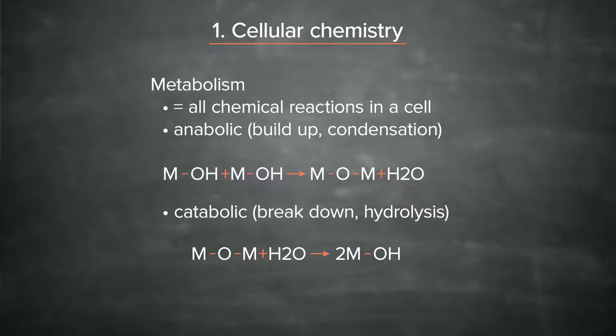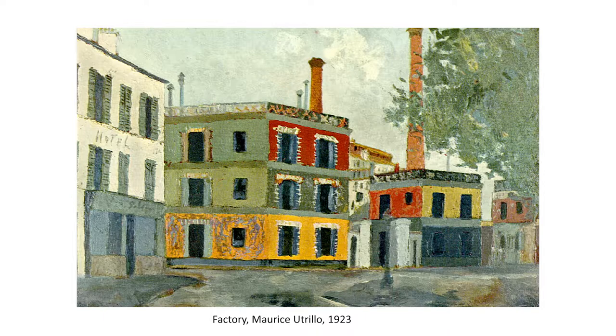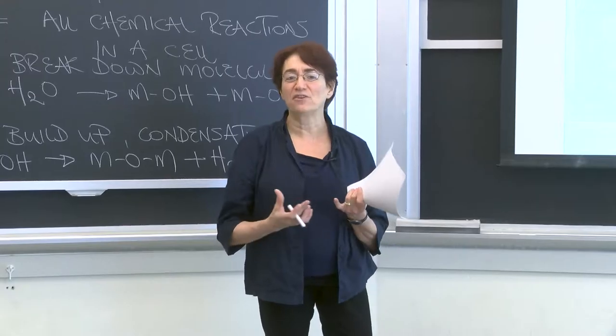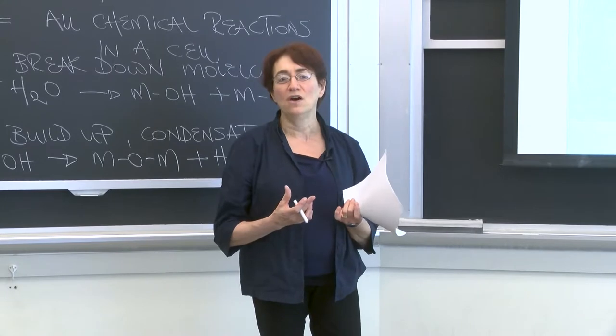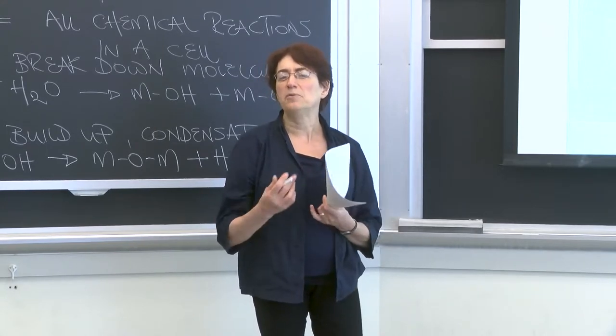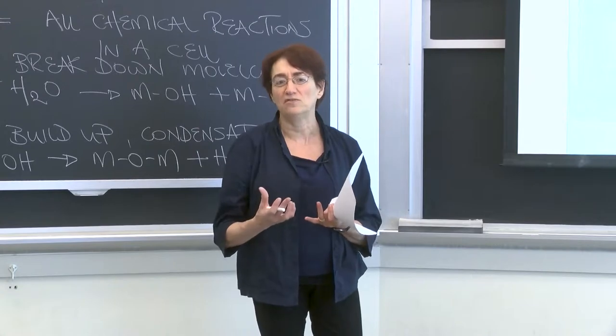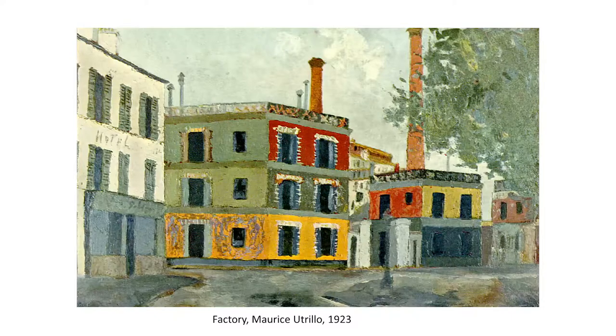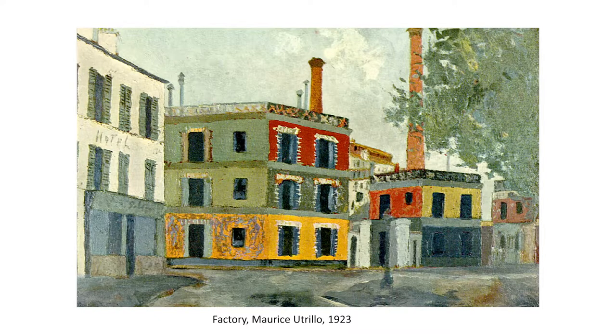These two types of chemical reactions are really pivotal to how the cell functions. Let's take a look at a couple of slides. This first one introduces you to the notion of the cell as a factory. This beautiful painting lays for us a kind of framework of thinking about the cell as a production process, a production plant, where things are made, they're broken down, they're made again.